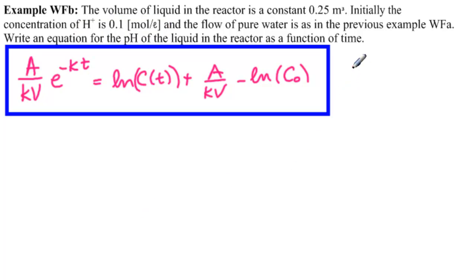Now, again, the key is that pH equals minus log of C, if C is in moles per liter. Except that we don't have log of C, we have ln of C. So how can we make ln into log?